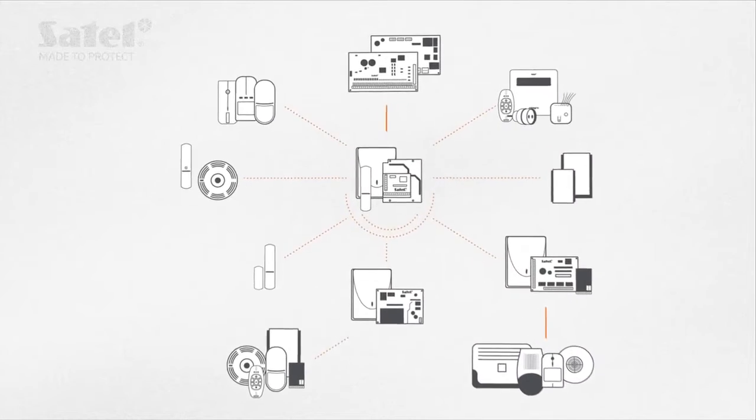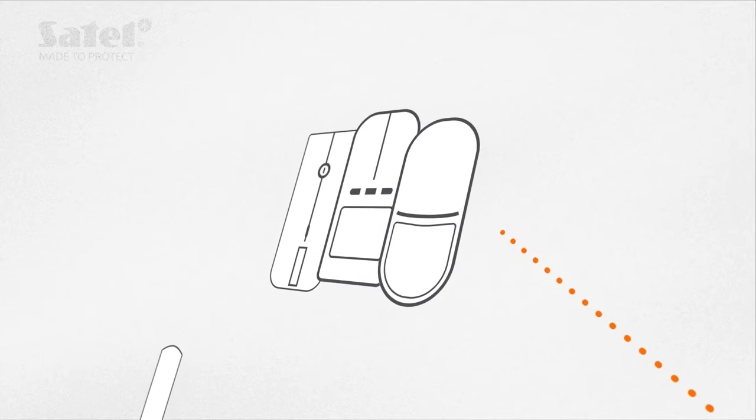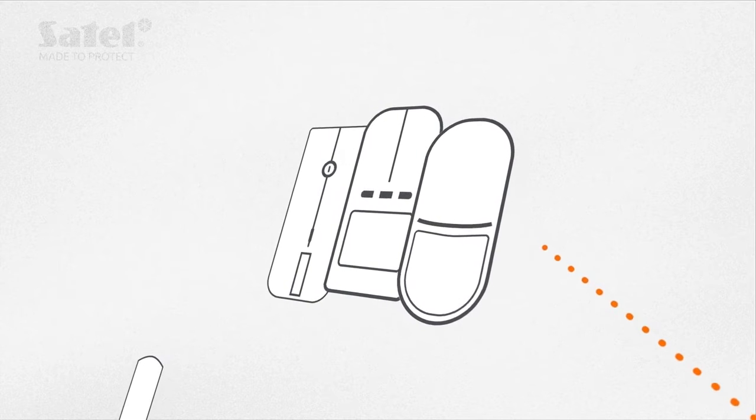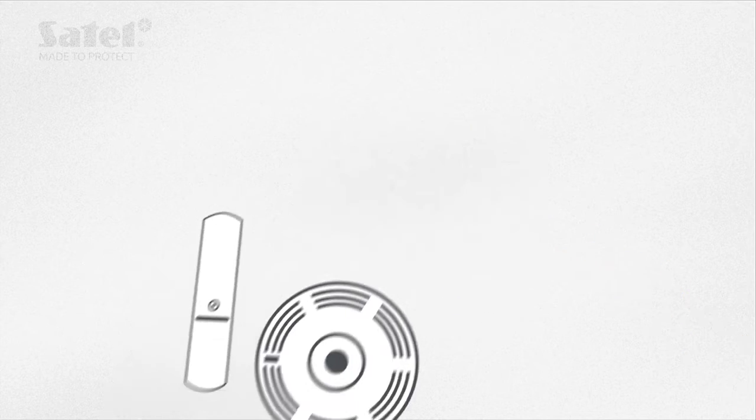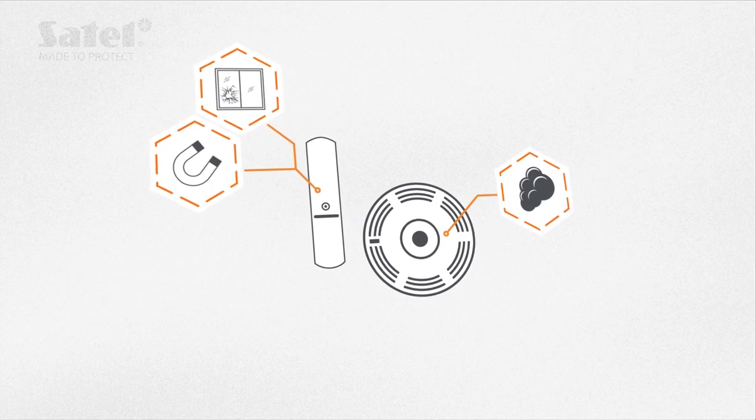The broad range of devices that can be used in the ABAX2 system comprises wireless PIR and dual-tech motion detectors, including curtain detectors for perimeter protection, as well as magnetic contact, glass break, smoke, and smoke and heat detectors.